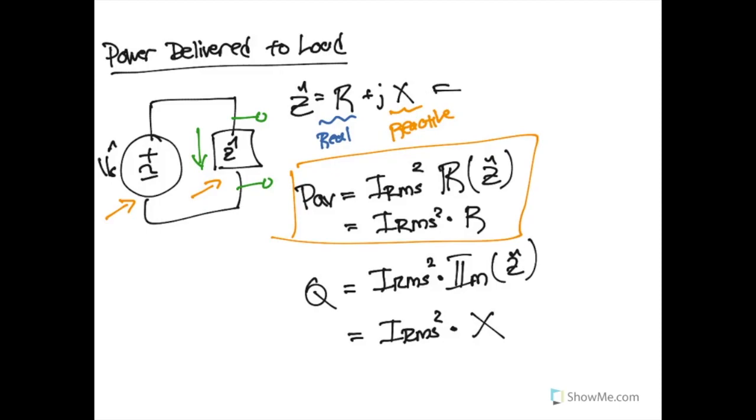And so for example, if you were calculating the impedance of this load and it was 3 plus J4, then what you would have is that this value here would be 3, and this value here would be 4, and IRMS would be whatever the RMS current is flowing through that particular load at that given time.